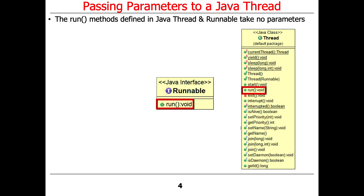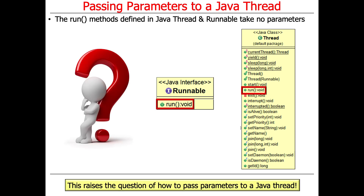Why this appears hard at first glance is that the run method — the thing that actually starts doing the computation in a separate thread — takes no parameters. And that's true both for the run method on Thread as well as the run method on Runnable. So how do you get them to do something?